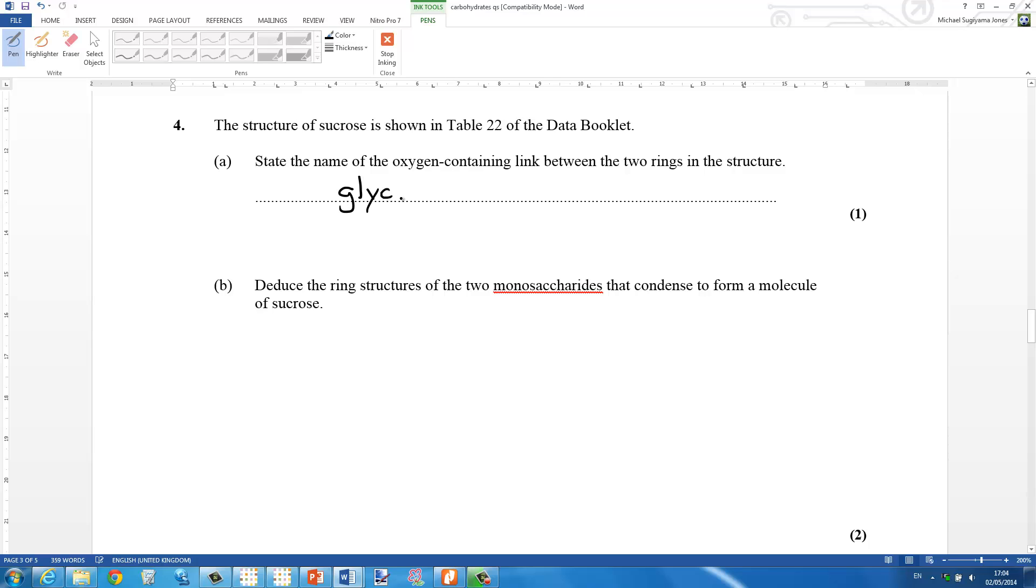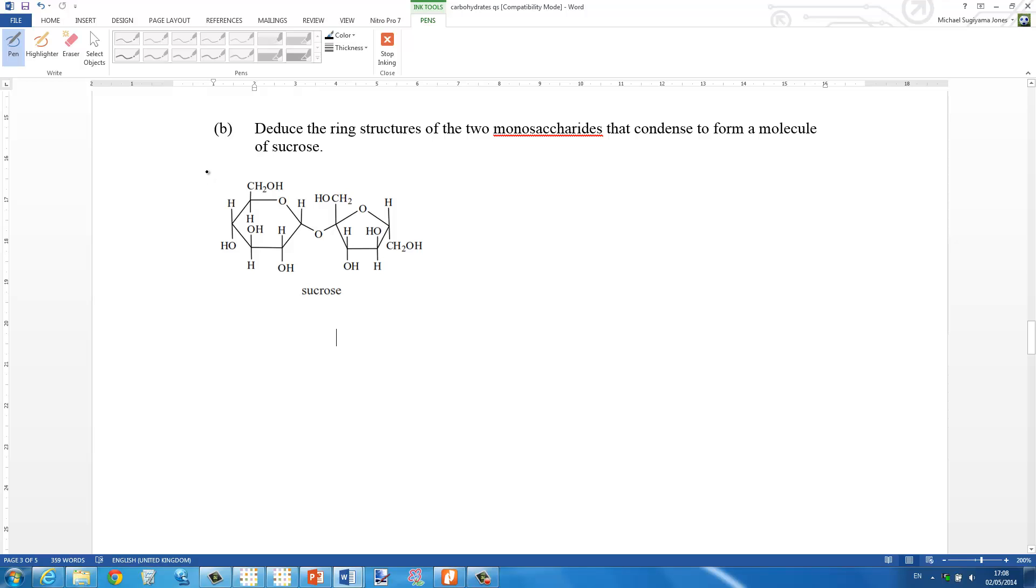Next is the name of the oxygen containing link that links two sugars. It's called the glycosidic link. And again, we have to deduce the structures of the two monosaccharides. On the left there, we have alpha glucose. On the right, we have fructose.